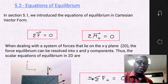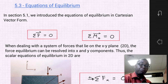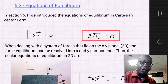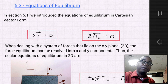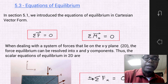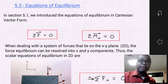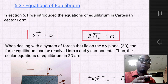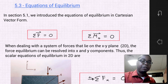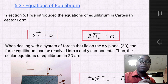Section 5.3: equations of equilibrium. Previously, in section 5.1, we introduced the equations of equilibrium in the Cartesian vector form. In statics, where we have bodies that have no acceleration and have either a constant velocity or a velocity equal to zero, and they're also rigid bodies, there are two equations of equilibrium that must be satisfied.